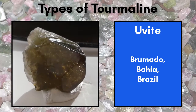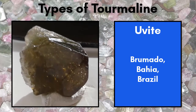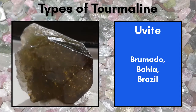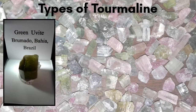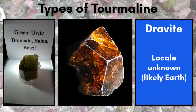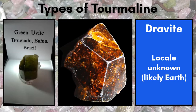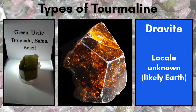Uvite is an uncommon variety of tourmaline that can be green to reddish-brown in color. It can be mistaken for dravite, and the two can be difficult to tell apart and can occur in the same environment. Dravite is often brown in color, and like uvite, normally occurs as short, stubby crystals. These two minerals are a prime example of why color is a terrible way to classify minerals.